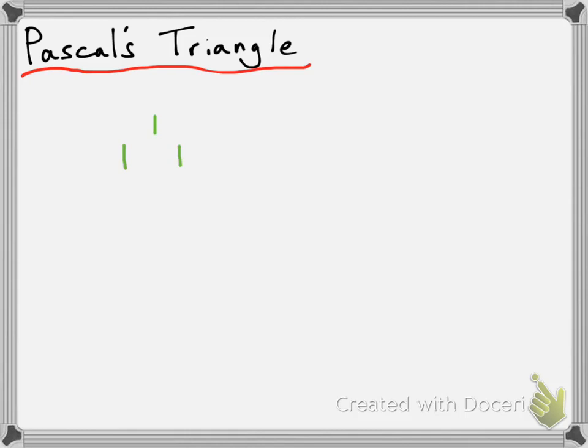Now the next row is going to have one more term than this one, which means it's going to have three terms. Just like the one previous, the one on the very left and the one on the very right are going to have values of one. But there's going to be a term in the middle, and the rule is: to get the value of the terms in the middle of this row, you take the row above it, particularly these two terms, and add them together. So one plus one is two, which means we have a value of two in the next row.